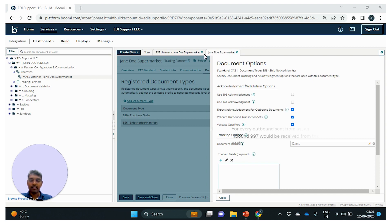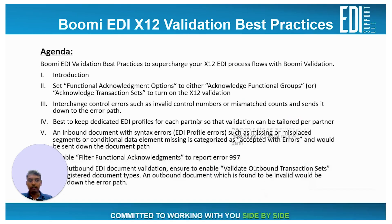Once a document is sent down the error path, there are two important document properties to use. It is important to know the error message explaining why the document was rejected instead of being sent to the trading partner. The two properties are 'outbound validation status' and 'outbound validation report.' You can reference these document properties and include them in the exception shape, in an email to intended recipients, or pass them to your error handler.